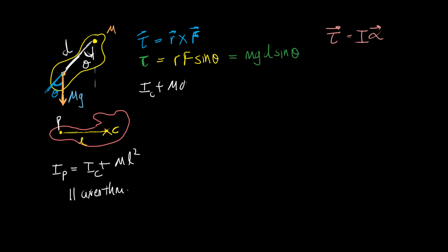Plus md squared times alpha. But alpha is as you know d2 theta by dt squared.